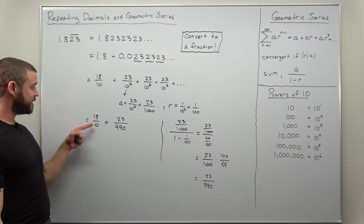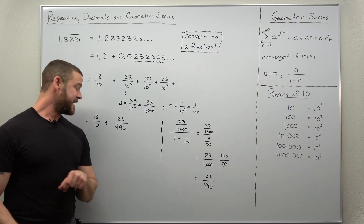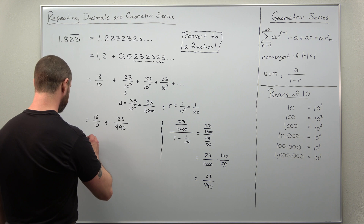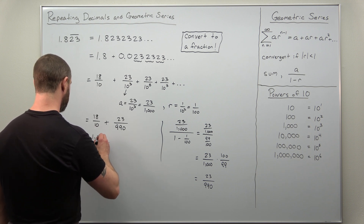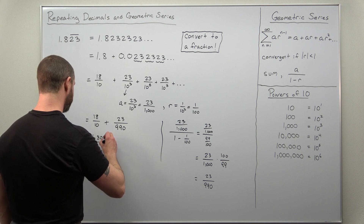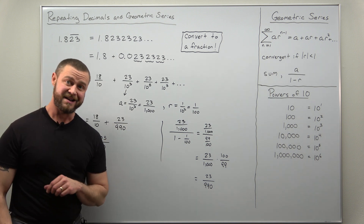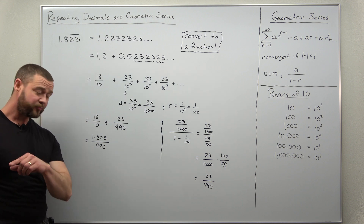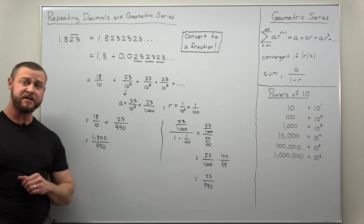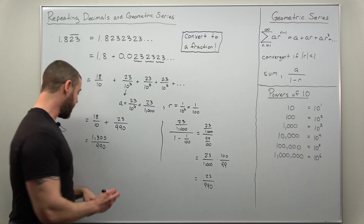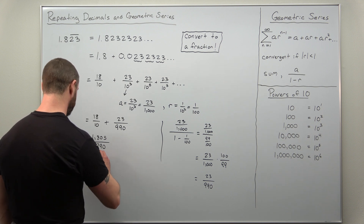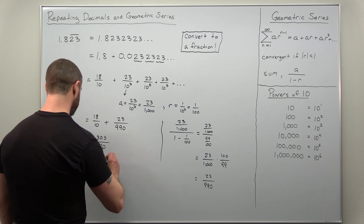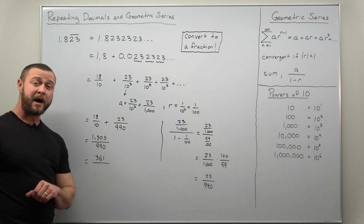Taking the first fraction and multiplying by 99 over 99, that converts it to 1,782 over 990. Adding 23 over 990 gives 1,805 over 990. You can even divide out a factor of five, and we get our simplified fraction or rational number: 361 divided by 198.